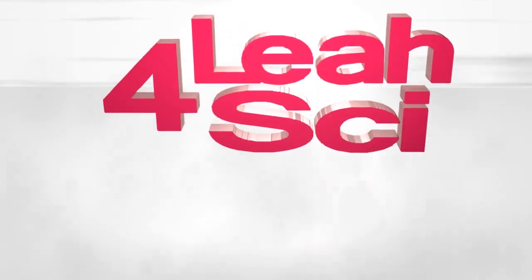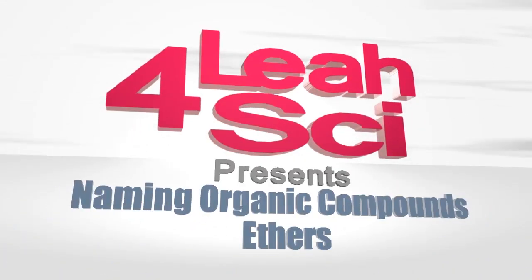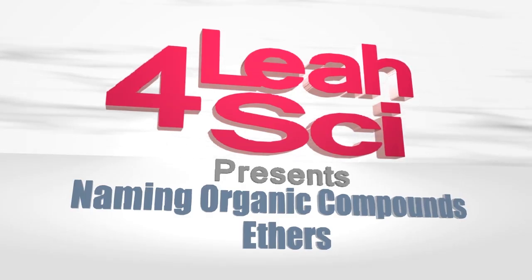Leah here from Leah4Sci.com and in this video I will show you how to name ethers. An ether is a molecule typically written out as R bound to O bound to R prime where R simply represents the rest of the molecule or some carbon chain and R prime can either be the same R group or a different R group.